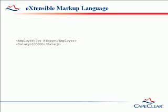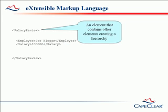XML documents can contain multiple elements, and elements can contain other elements creating a hierarchy. An XML document must have a single top-level element known as the root element or document element, and there must be matching end tags for each of the start tags. Such an XML document is often referred to as well-formed.